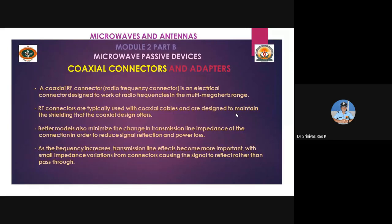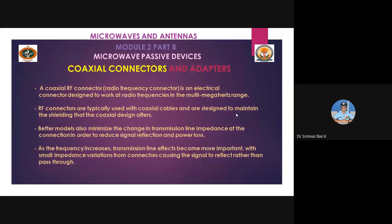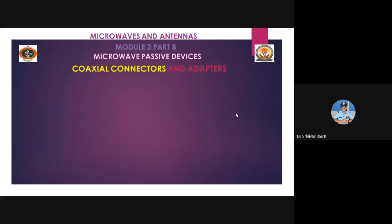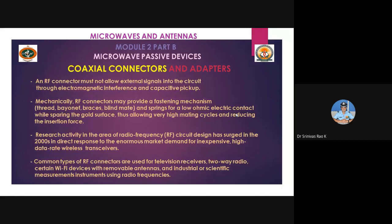Better, more sophisticated models of the coaxial cable tend to reduce reflections from impedance mismatch or any kind of load imbalancing, which causes power loss. As frequency increases, the transmission line effects become more important, with small impedance variations from connectors causing the signal to reflect rather than pass through.